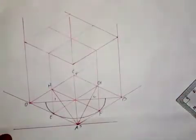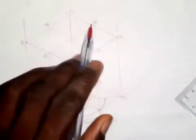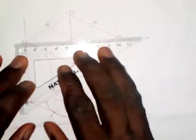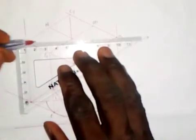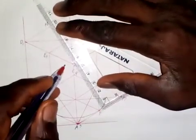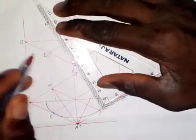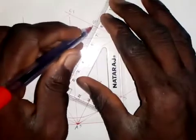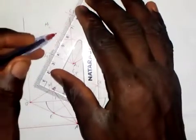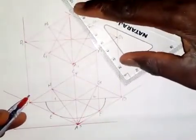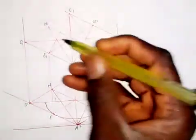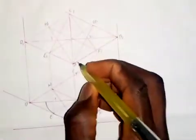I will now label the points of the upper square: A1, B1, C1, D1, E1, F1, G1, and H1. Then I will join D1 and B1 together, join A1 with H1, join A1 with G1, join C1 with E1, and join C1 with F1. This gives me points one, two, three, and four for the top circle.